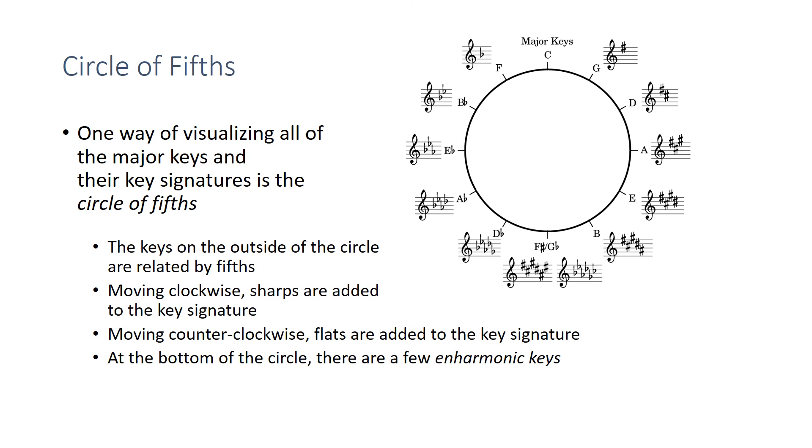Another interesting observation about the circle of fifths is you can see the same pattern of letters that we learned for key signatures. F-C-G-D-A-E-B, or foxy cheerleaders get dates after every ball game. And then going this way, we have B-E-A-D-G, and then C flat would be there. So the same patterns are visible on the circle of fifths. You can use the circle of fifths as a tool to help you visualize keys and key signatures. All right, go ahead and take the quiz.